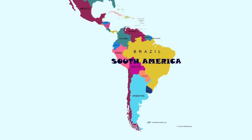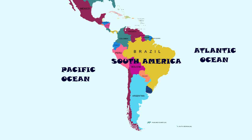South America is a continent located in the western hemisphere, with most of its land area lying in the southern hemisphere. It is bordered on the west by the Pacific Ocean, on the north and east by the Atlantic Ocean, and on the north-west by North America and the Caribbean Sea.